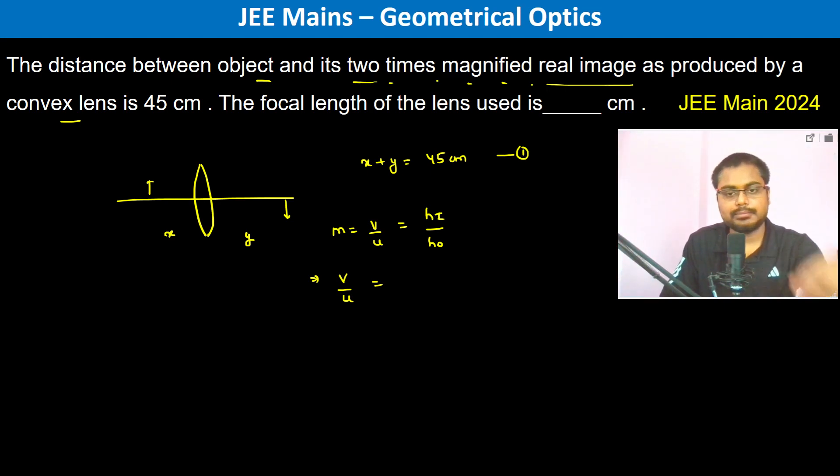Two times magnified real image, so height of image is two times the height of object. But this is minus, so therefore V should be equal to minus of 2U. Therefore, this Y is actually 2X.